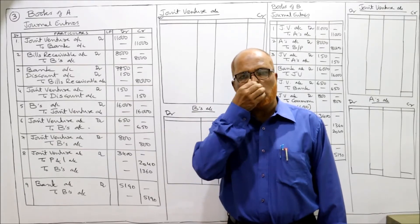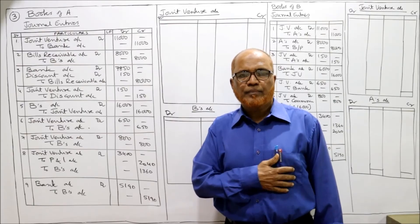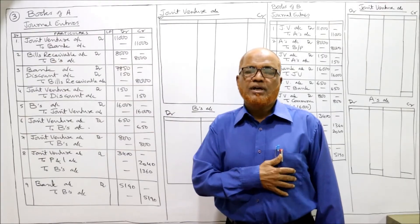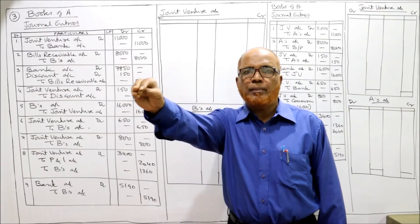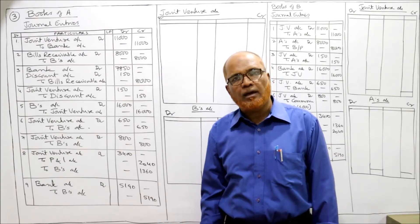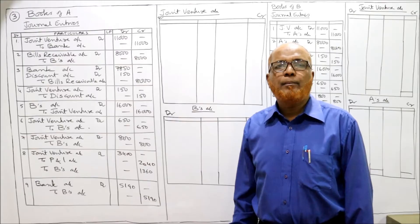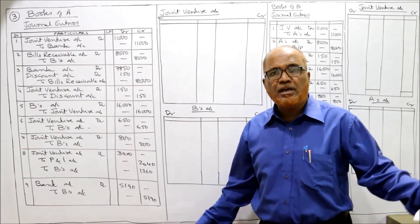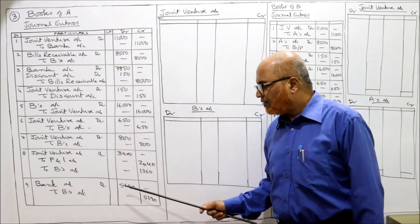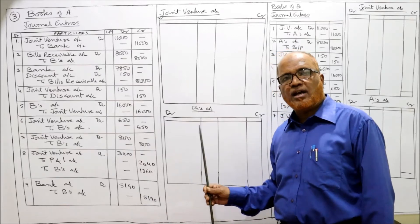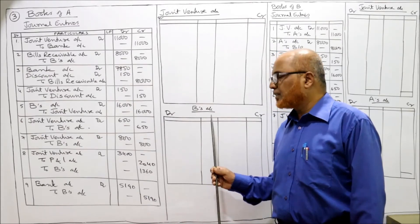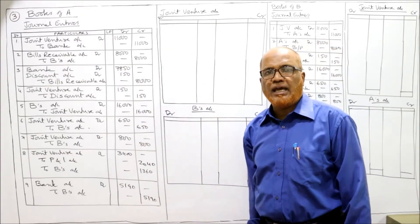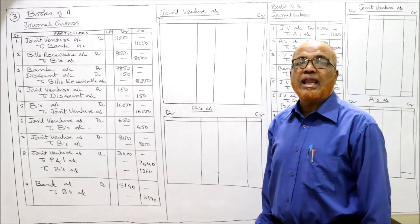B sold goods for 16,000. Out of this, 8,000 rupees advance was already given via bill of exchange. Then deducting B's expenses, commission, and profit, the remaining amount will be paid to A. A is getting cash, so the entry will be: Bank Account Dr. to B's Account - 5,190. This 5,190 is obtained after preparing B's account. These are the journal entries in the books of A.